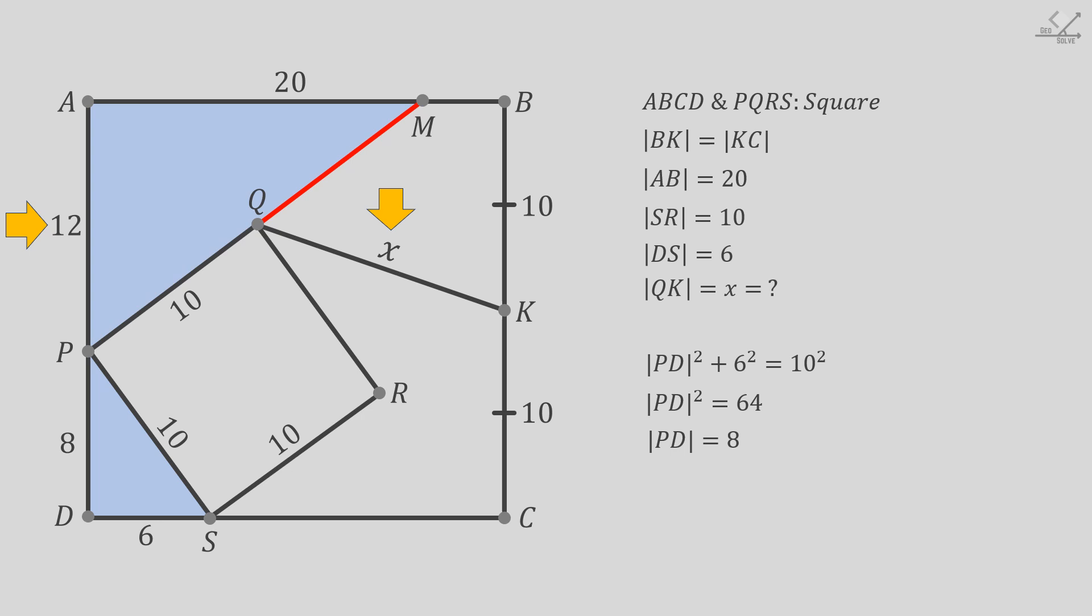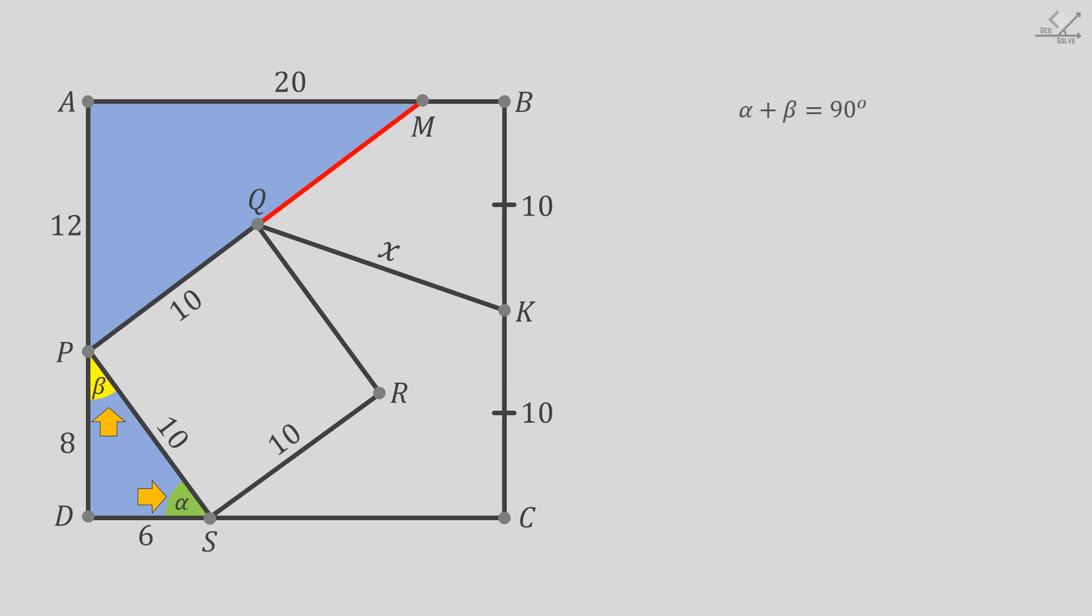Now let's extend this side of the small square and also focus on this triangle. Let's show that these two triangles are similar. To do that, let's call this angle alpha and this angle beta.